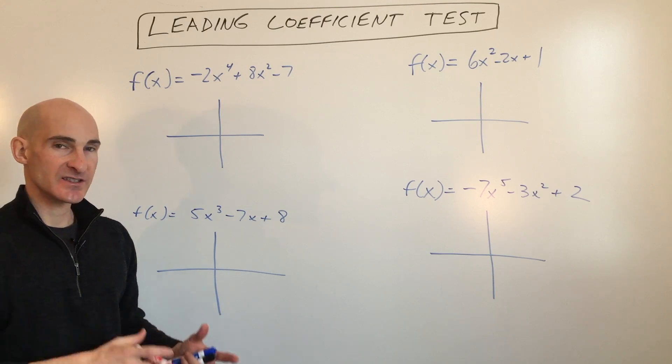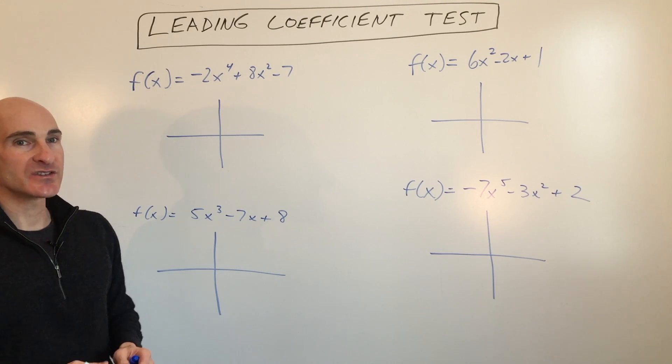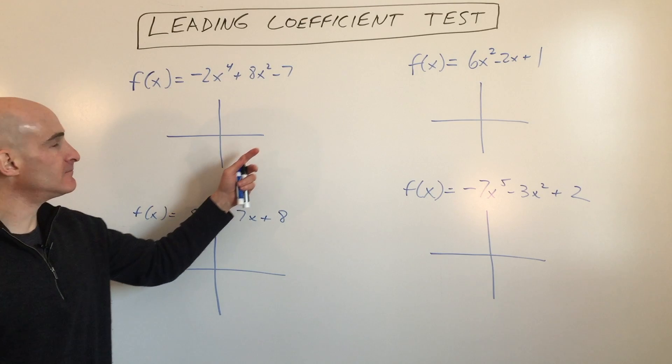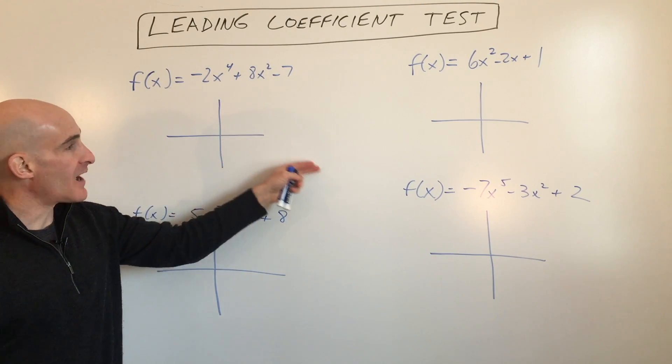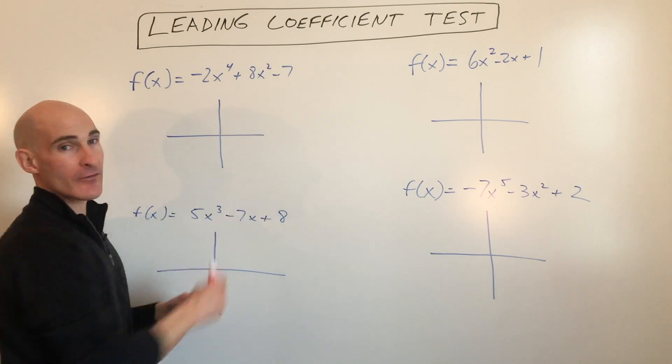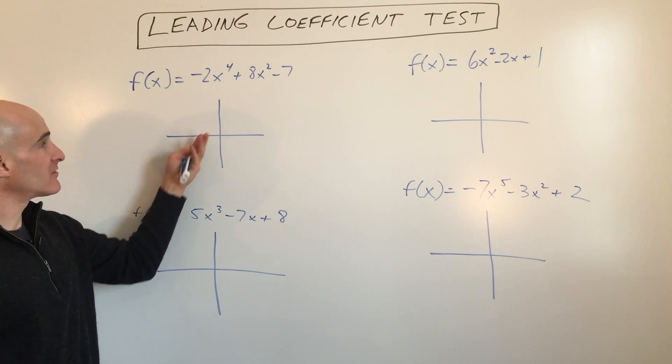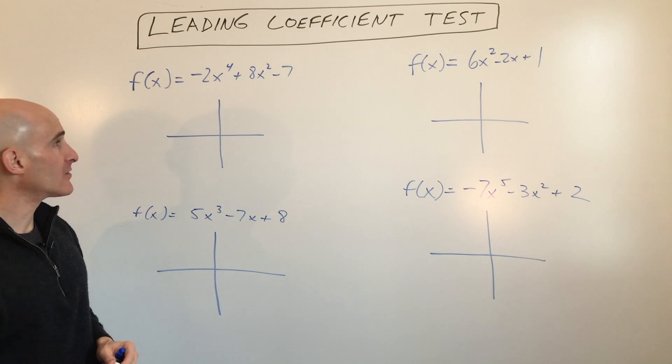The leading coefficient test determines what the end behavior is. When we talk about end behavior, we talk about whether the graph is going up to the right, down to the right (that's the right end of the graph), or up to the left, or down to the left (that's the left end of the graph).